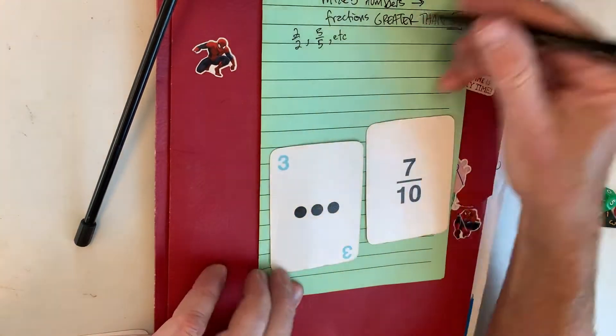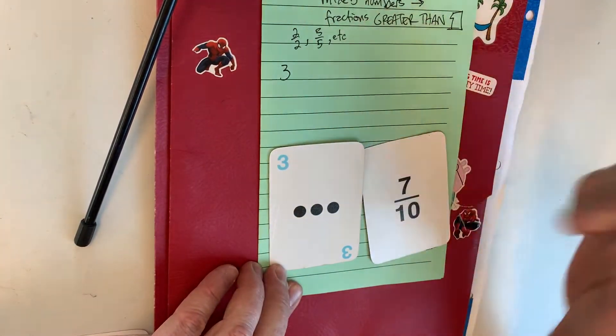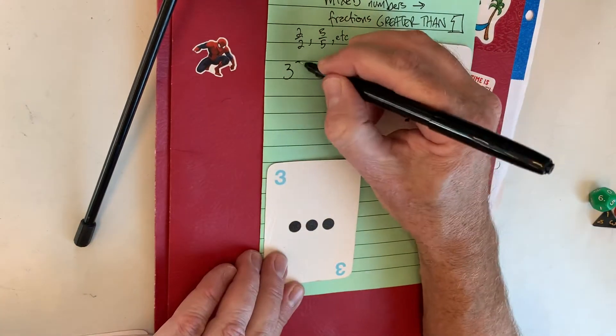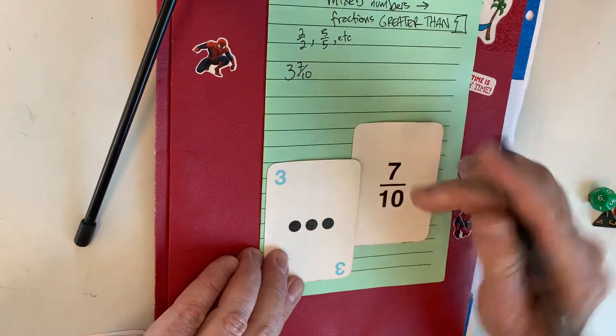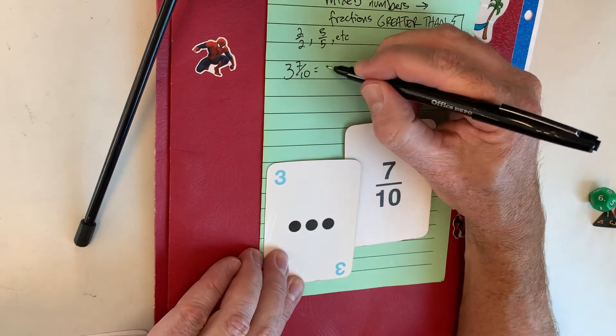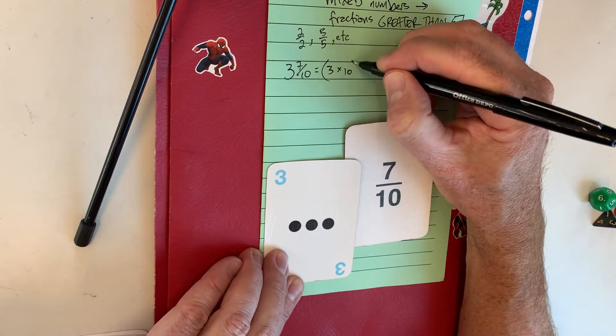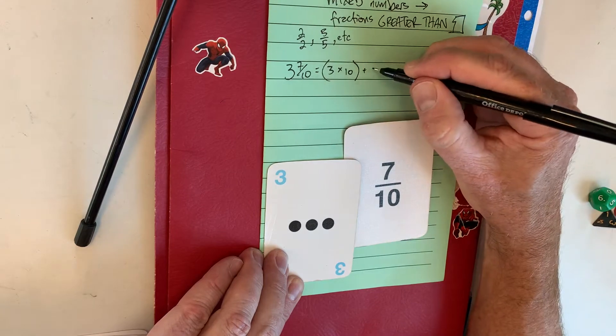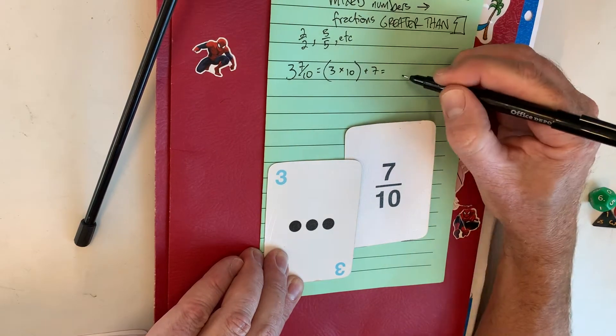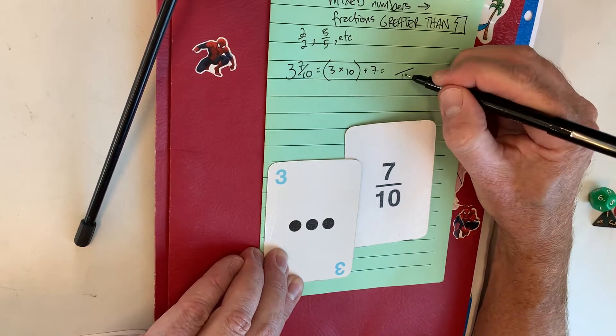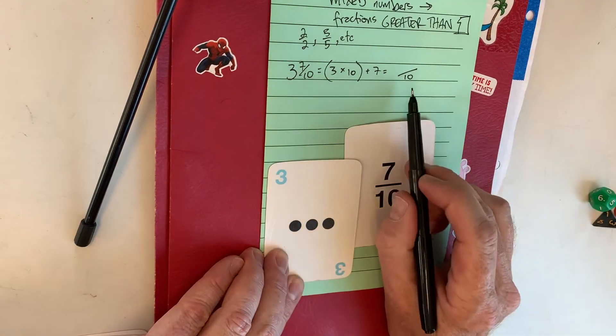So I drew a three. The whole number is three, fraction seven-tenths. And then the formula is: the whole number times the denominator—denominator is ten—then you add the numerator, and then the denominator you started with is the denominator you end with.